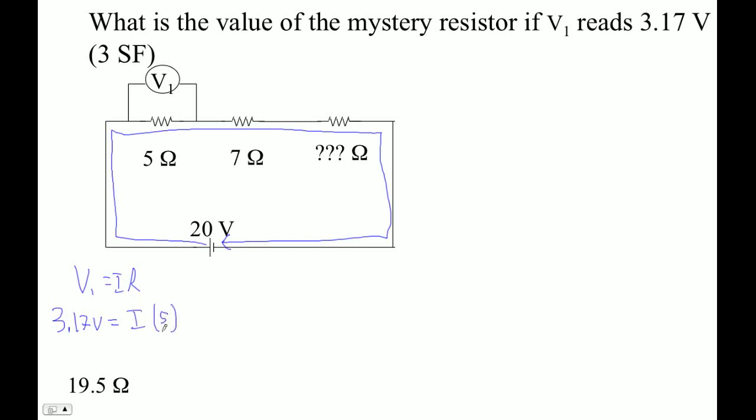It seems like we can find I, can't we? Okay, so 3.17 divided by 5 is 0.634.